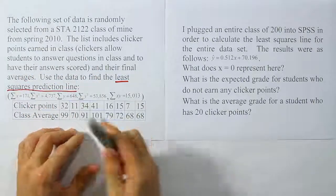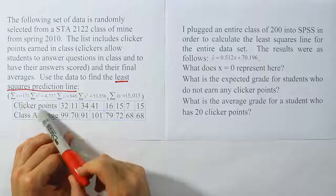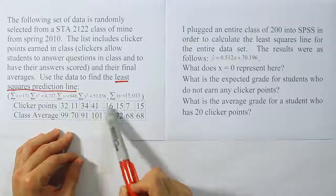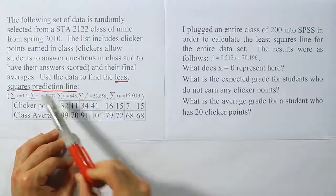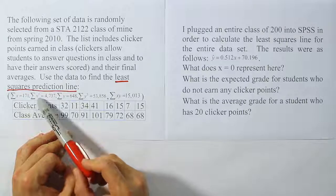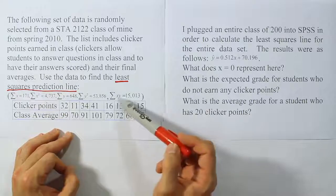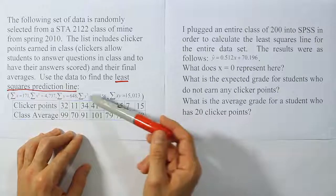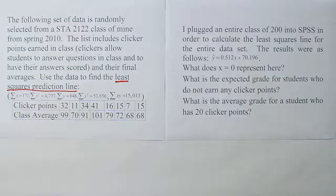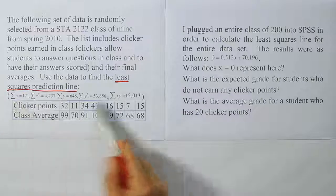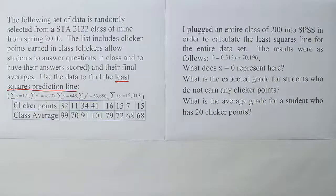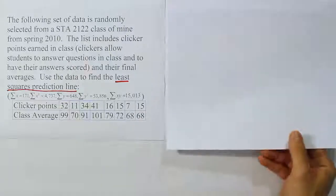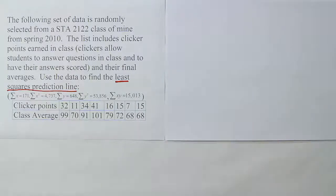We want to find the least squares prediction line. What's really nice about this problem is they've given us all those summary values that we normally have to calculate from the data. We have the sum of the X column, the sum of X squared, the sum of X times Y, and we have the sum of Y and the sum of Y squared. Let's put the values they gave us to use in order to come up with the least squares prediction line. The first thing you want to do once you have all that data tabulated like they've done for us